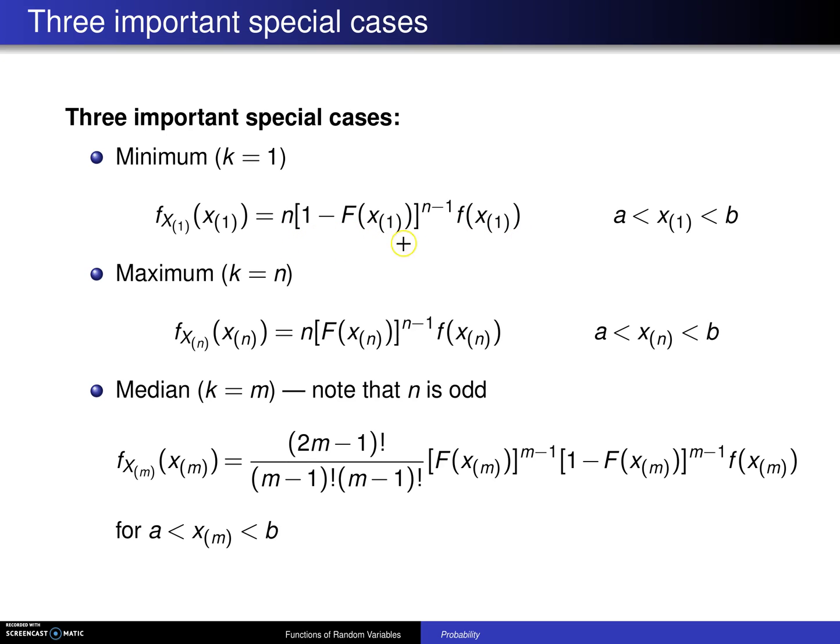that results in this expression right here on the support a is less than x1 is less than b. Again, a and b are the lower and upper bounds of the support, and they could be negative infinity and positive infinity if needed.